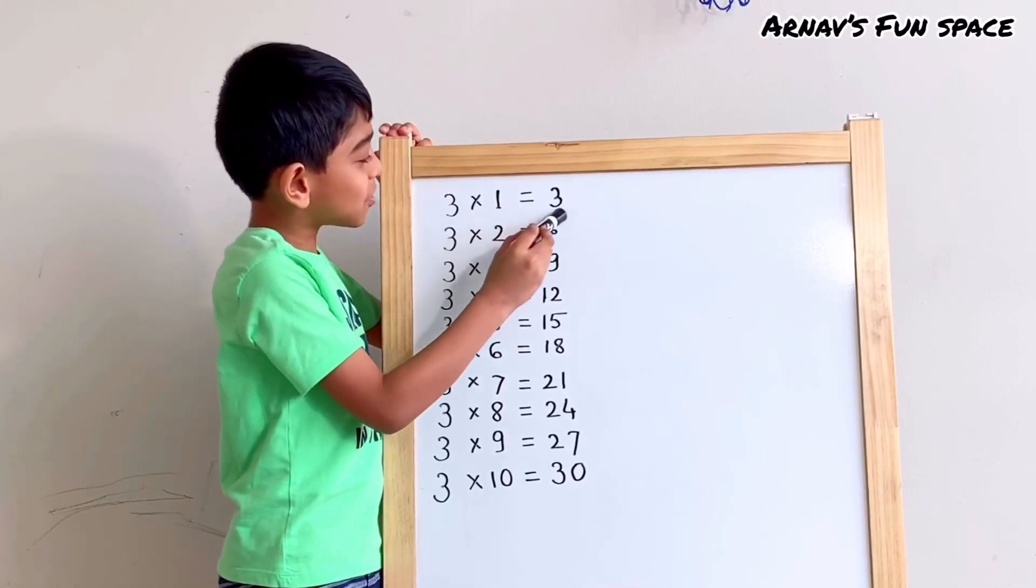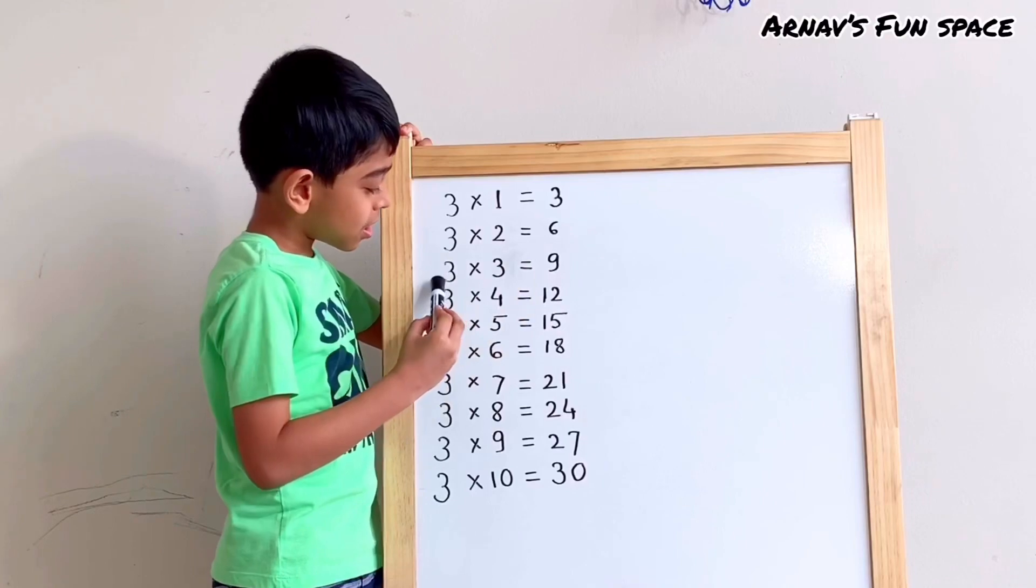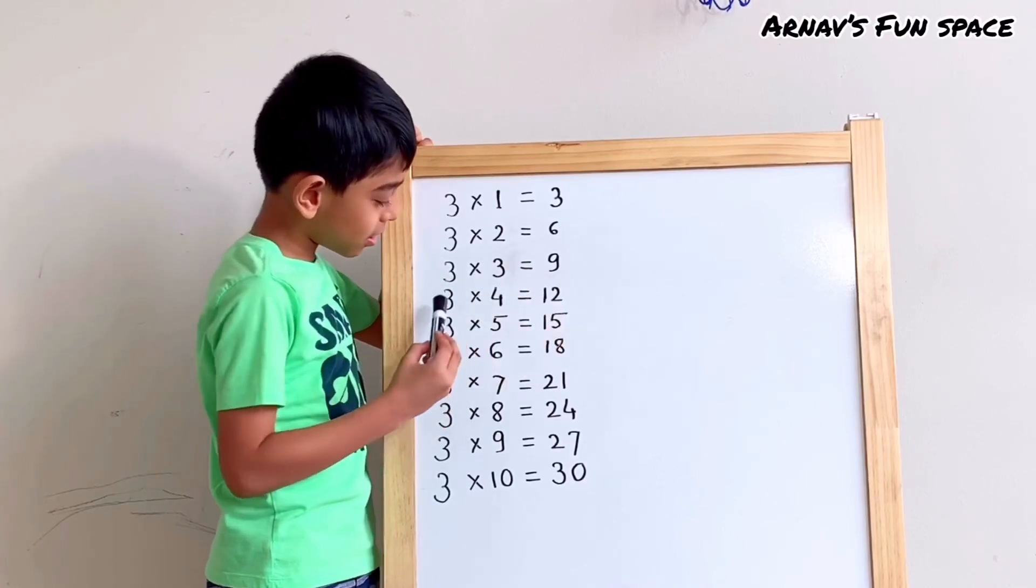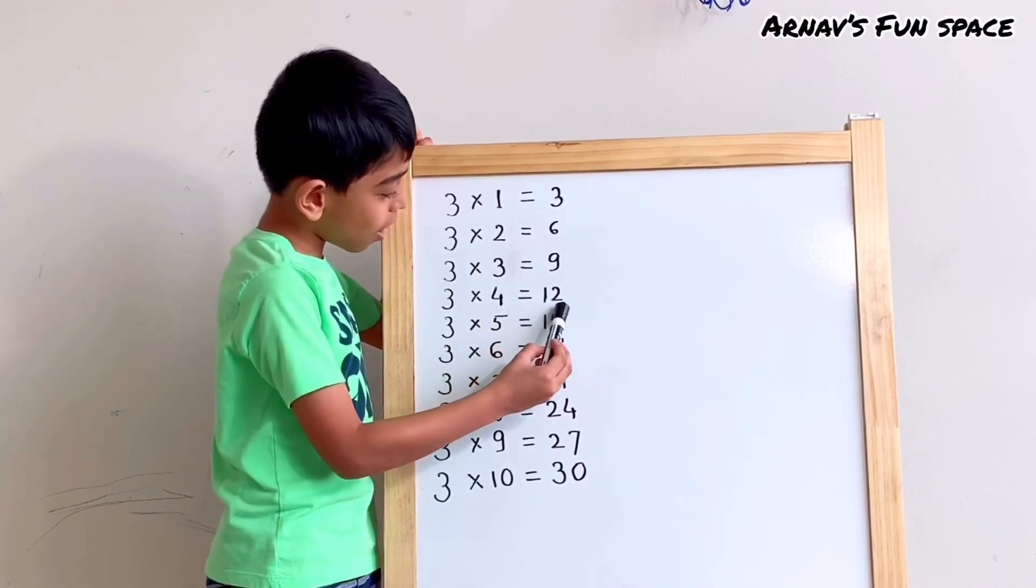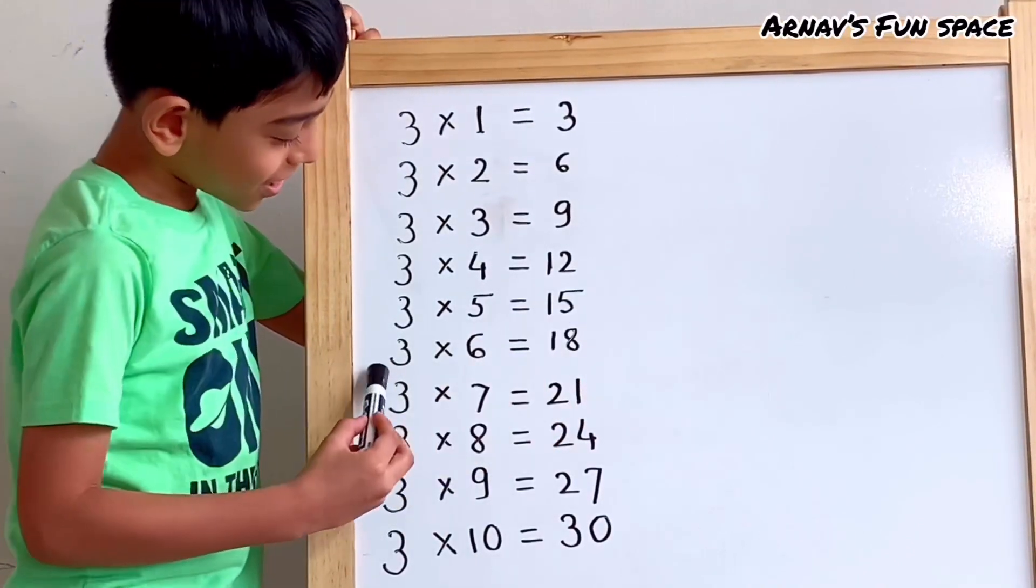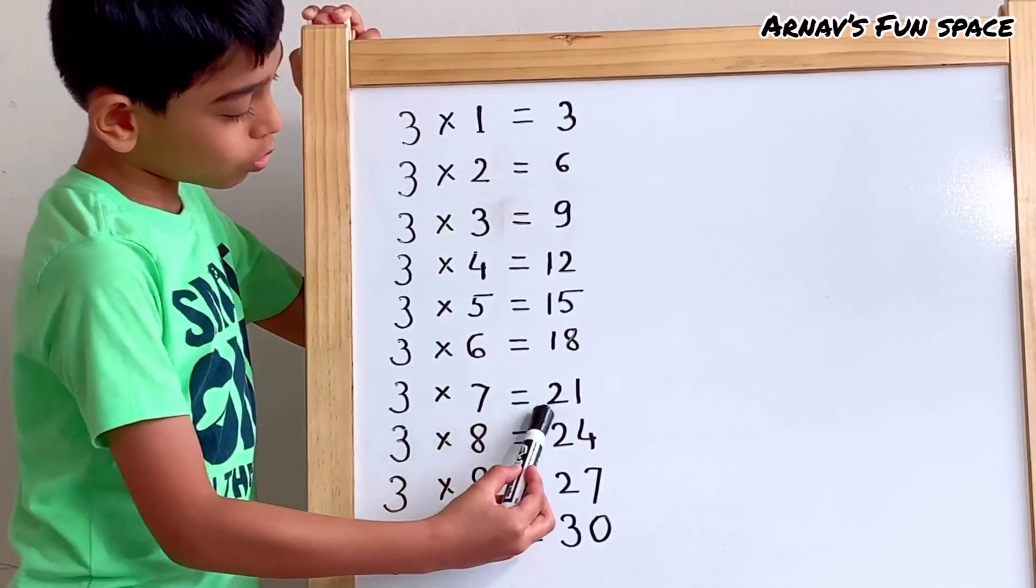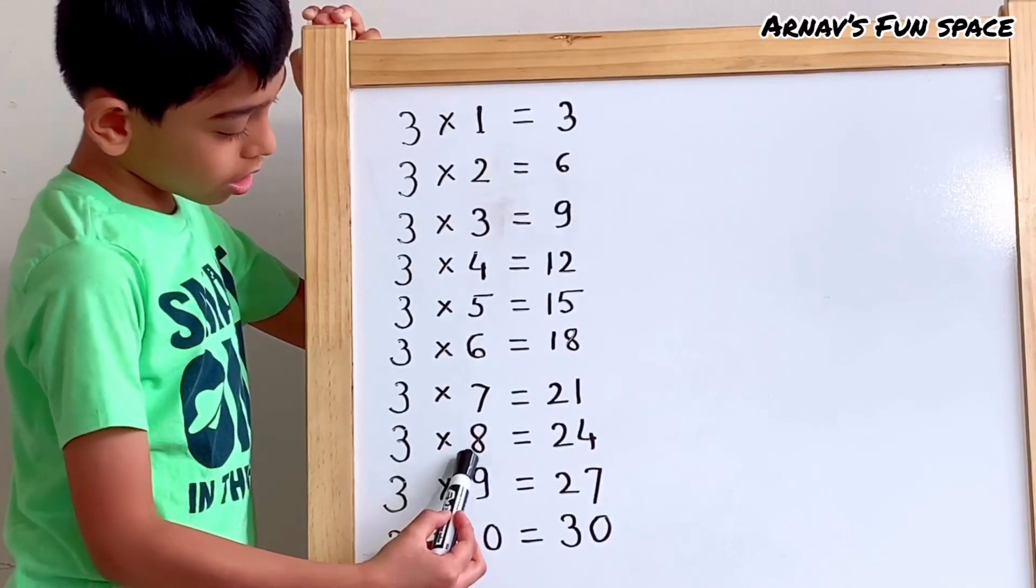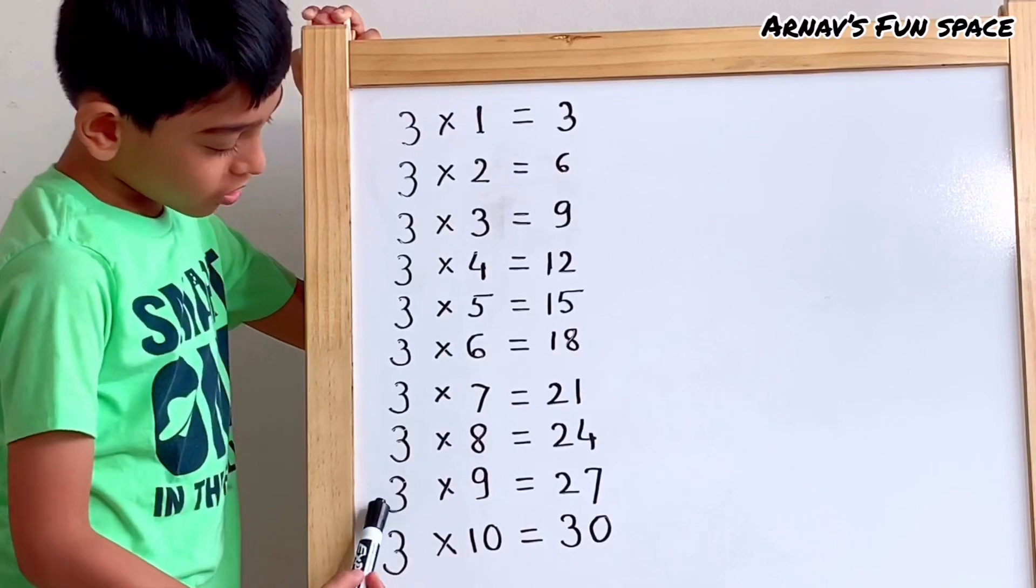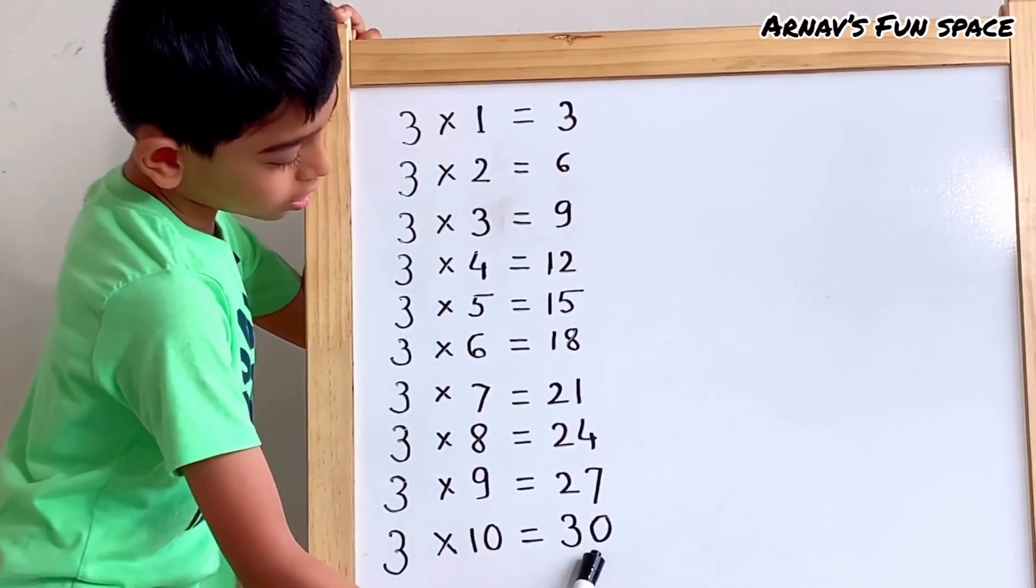3 times 1 is 3. 3 times 2 is 6. 3 times 3 is 9. 3 times 4 is 12. 3 times 5 is 15. 3 times 6 is 18. 3 times 7 is 21. 3 times 8 is 24. 3 times 9 is 27. And 3 times 10 is 30.